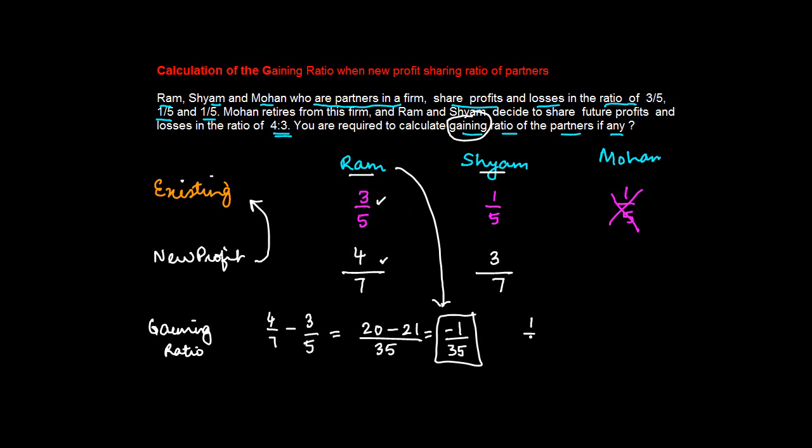Similarly let's see for Sham. 1/5 is his existing ratio. His new ratio is 3/7 minus 1/5. 5 times 3 gives you 15 minus 7, which equals 8/35.